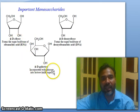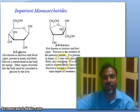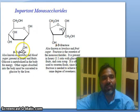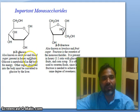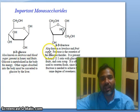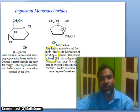Other important monosaccharides: beta-D-glucose, also known as dextrose or blood sugar, is present in honey and fruits. Beta-D-fructose, also known as levulose or fruit sugar, is also present in honey and fruits. Glucose is metabolized within the body for energy.